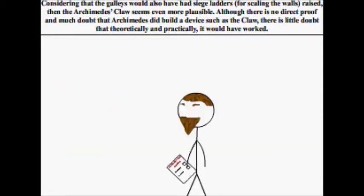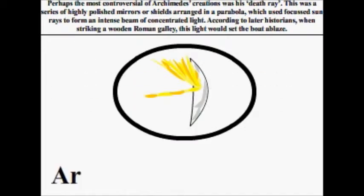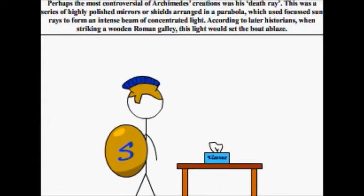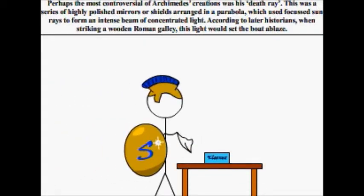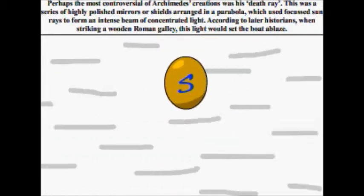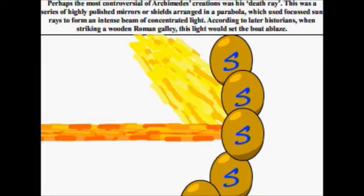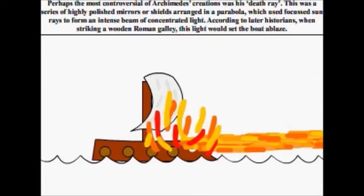Perhaps the most controversial of Archimedes' creations was his Death Ray. This was a series of highly polished mirrors, or shields, arranged in a parabola, which used focused sun rays to form an intense beam of concentrated light. According to later historians, when striking a wooden Roman galley, this light would set the boat ablaze.